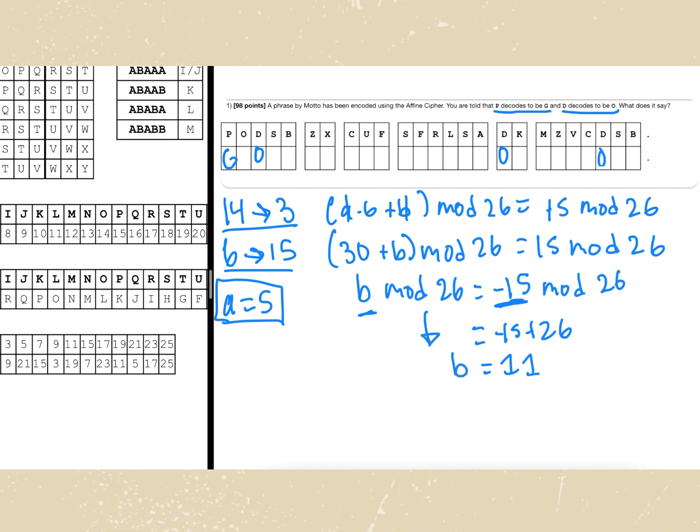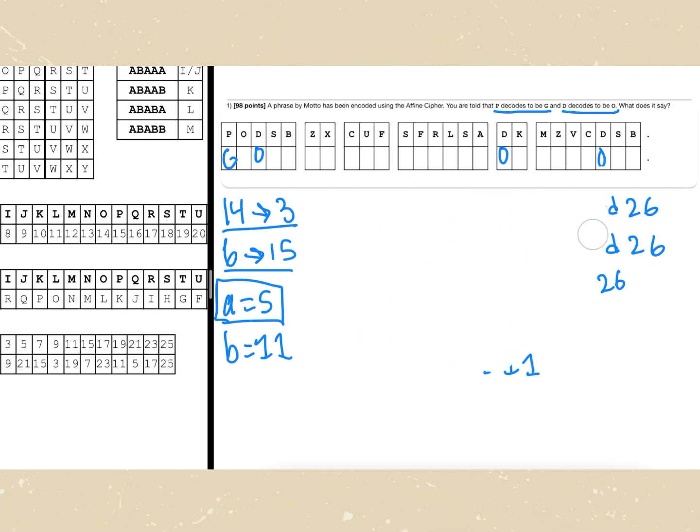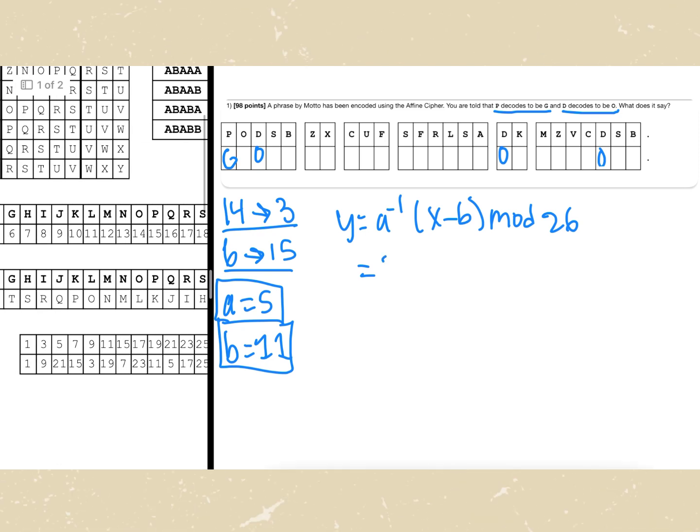So you have a is equal to 5 and b is equal to 11. So after we found out those two values we can plug it back into our decryption formula which is going to be y is equal to a inverse times x minus b modulus 26. Since we have a equal to 5 the inverse of that is 21, so 21 times x minus 11 mod 26.